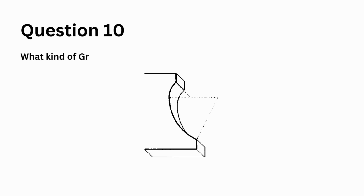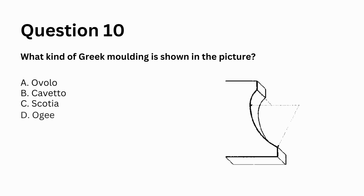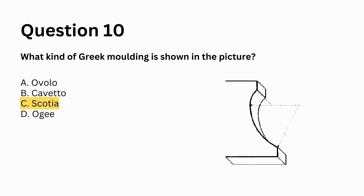What kind of Greek molding is shown in the picture? a. Ovalo, b. Kaveto, c. Scotia, d. A.O.G. Answer: c. Scotia.